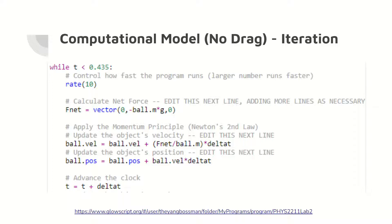Here is the iteration code for the model with no drag force. The motion of the ball is computed through iterations of roughly 1/60th of a second with a while loop until the time equals 0.435 seconds. The equations mentioned in the previous slide are shown in this iteration step.